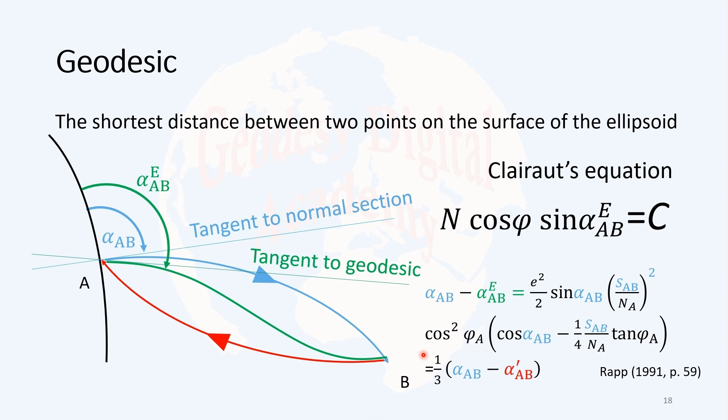One third of the difference between the direct and reverse normal section azimuths.